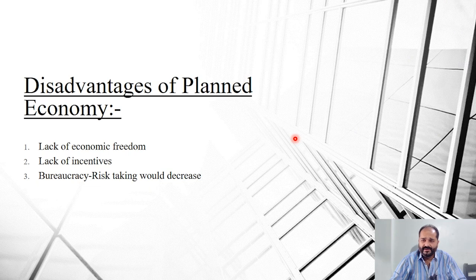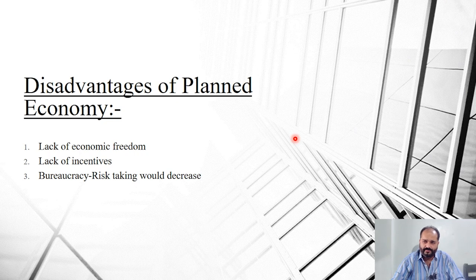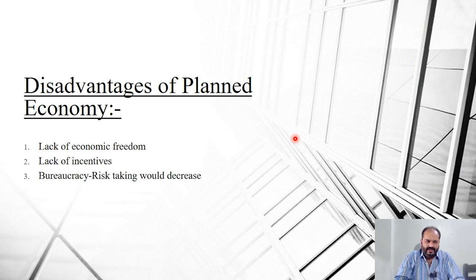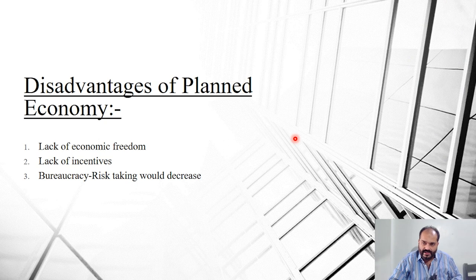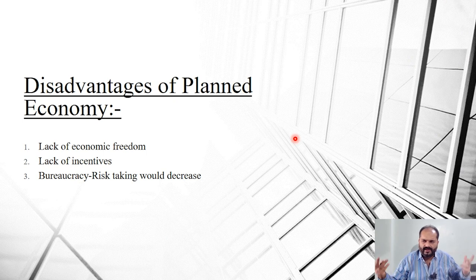Bureaucratic risk-taking is also decreased. Government officials in higher positions will not take many risks because even if they do, it won't be of much use. The products aren't theirs — they belong to the government. In a market economic system, a business owner would willingly take risks for his own company, but if the company isn't yours, why would you risk your income and your job? You'd just do whatever the government tells you.